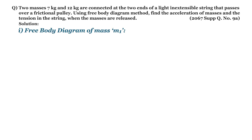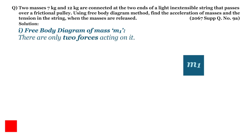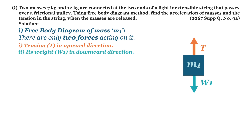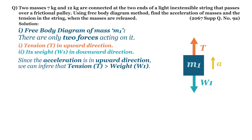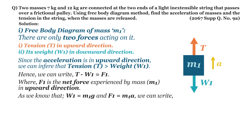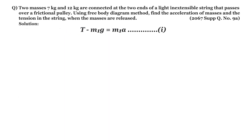Now let's draw a free body diagram of mass m1. There are only two forces acting on it: tension T in the upward direction and its weight w1 in the downward direction. Since the acceleration is upward, tension T must be greater than weight w1. Hence we can write: T − w1 = F1, where F1 is the net force on m1 in the upward direction. Since w1 = m1·g and F1 = m1·a, we get: T − m1g = m1a. Let this be Equation 1.